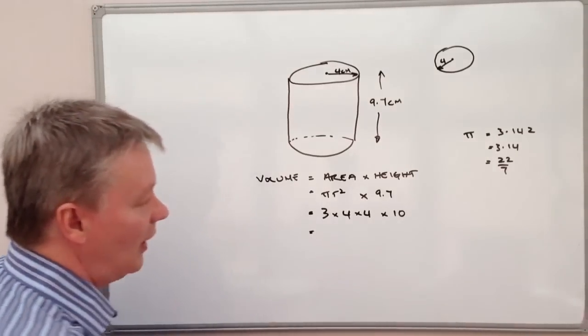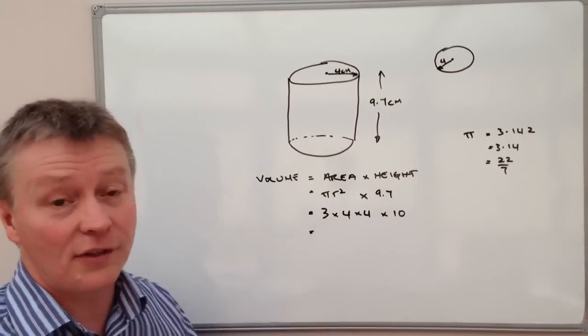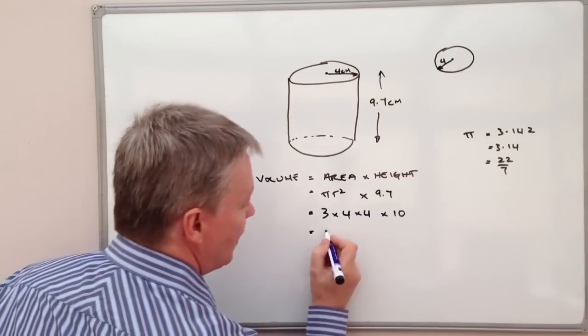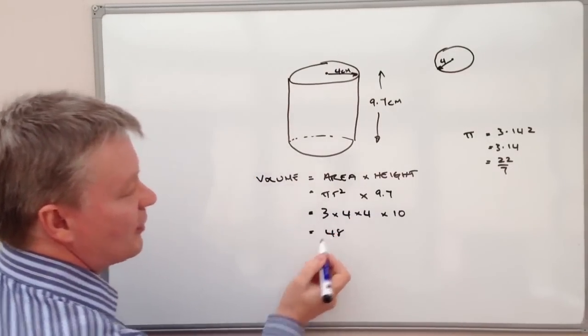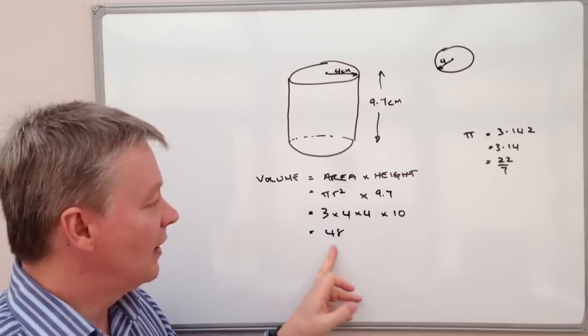So to calculate this I need to know a little bit about my times tables. I've got 3 times 4 is 12. And then 12 times 4 is 48. So 3 times 4 is 12, and then multiply by 4 again is 48.